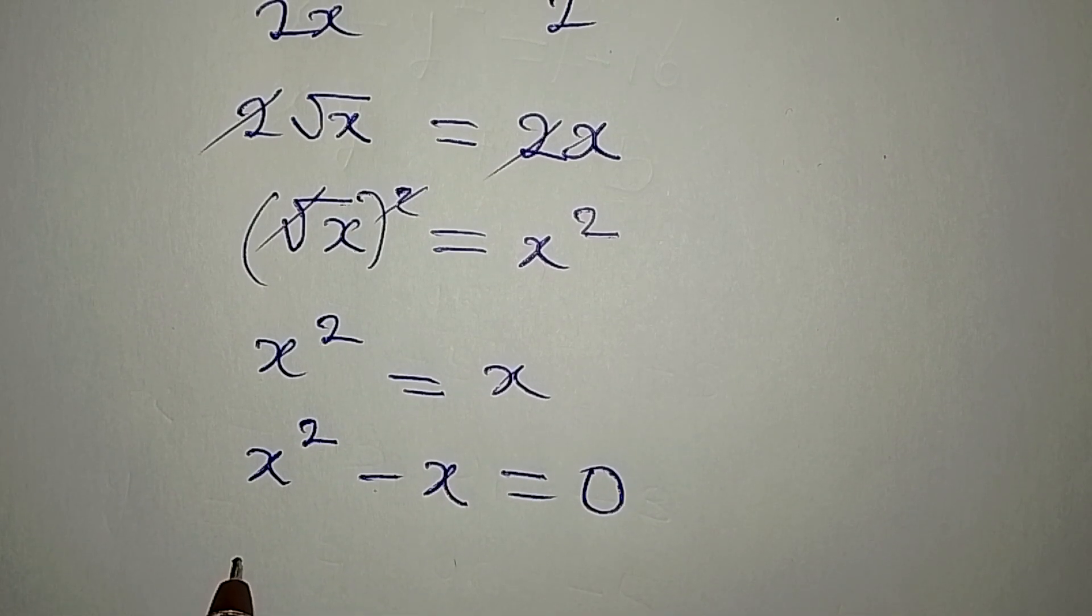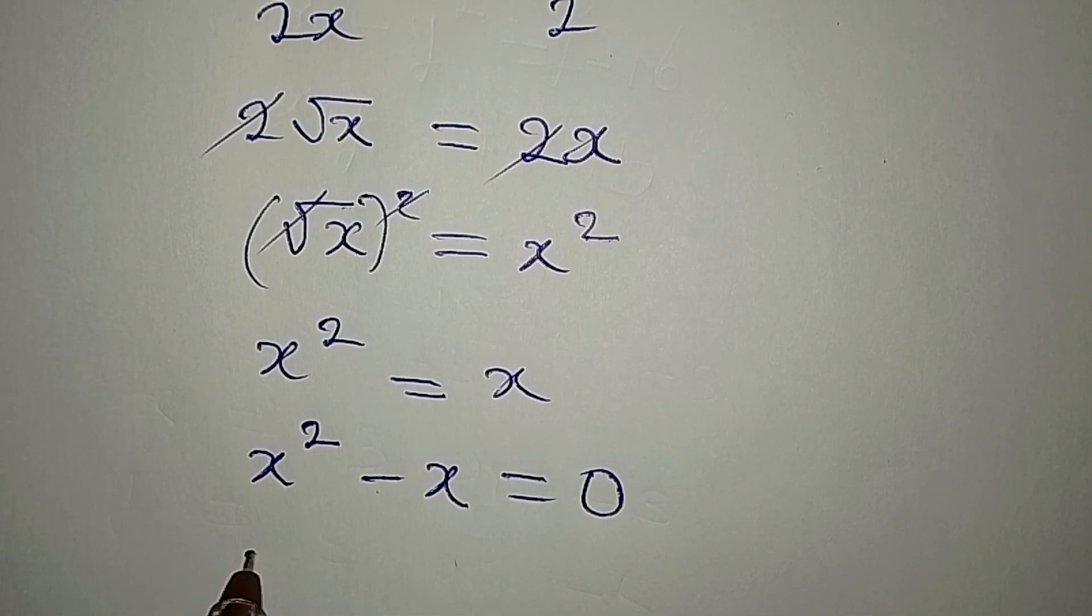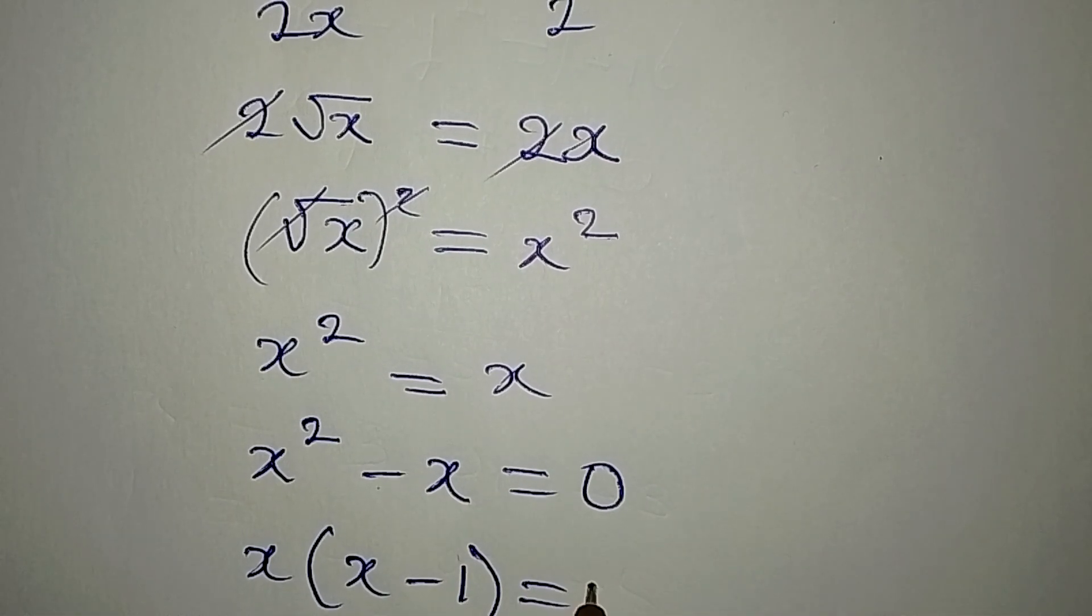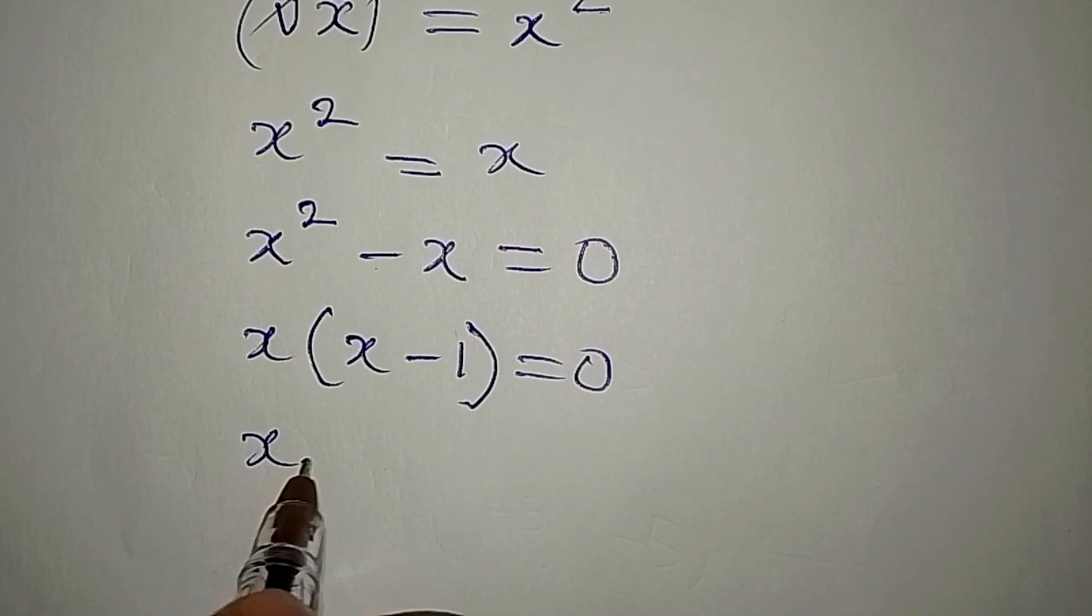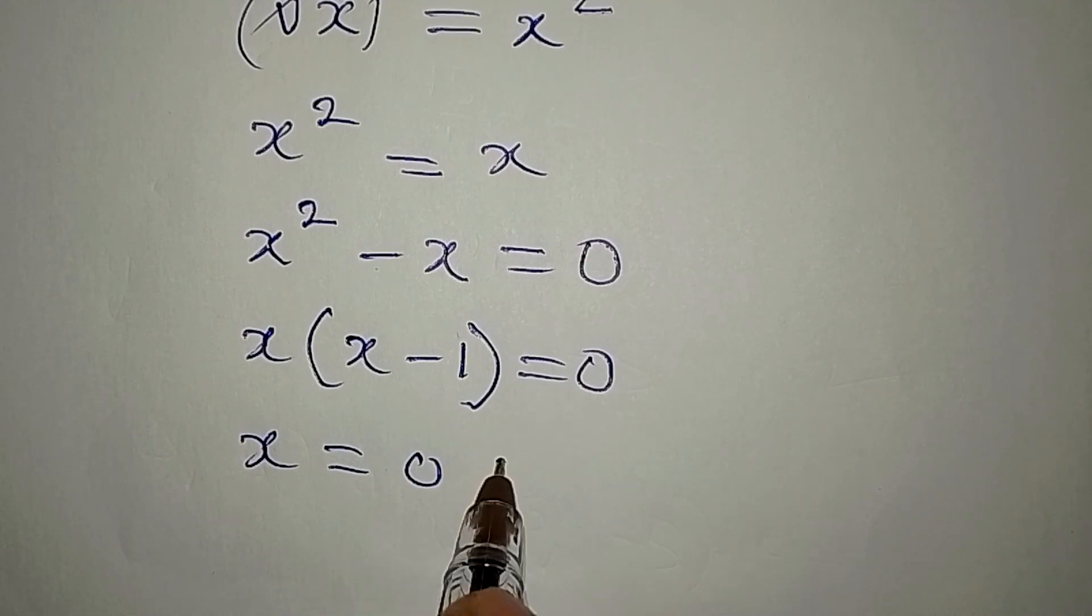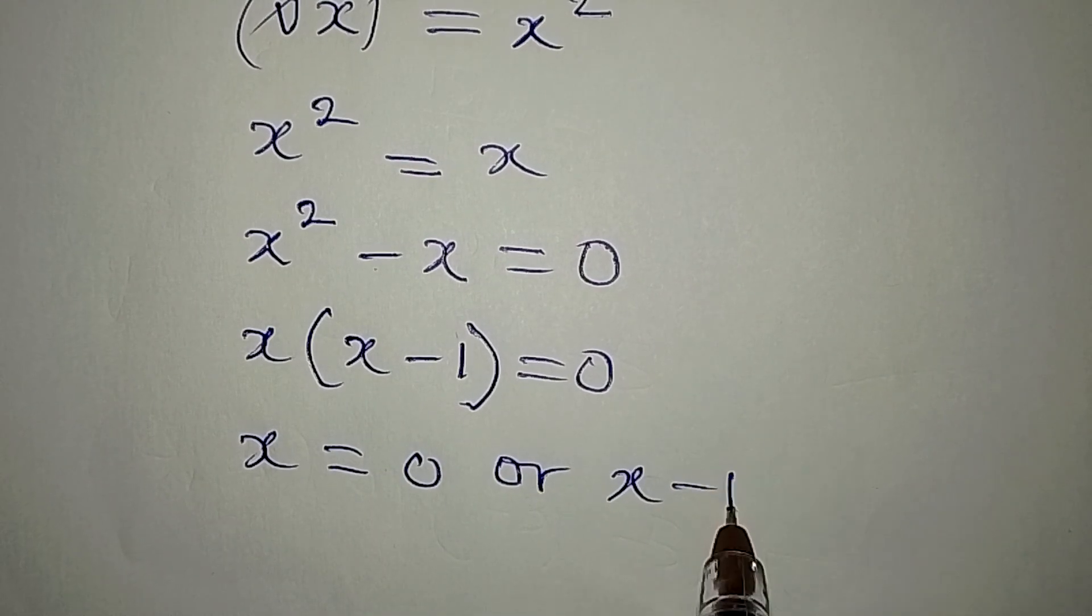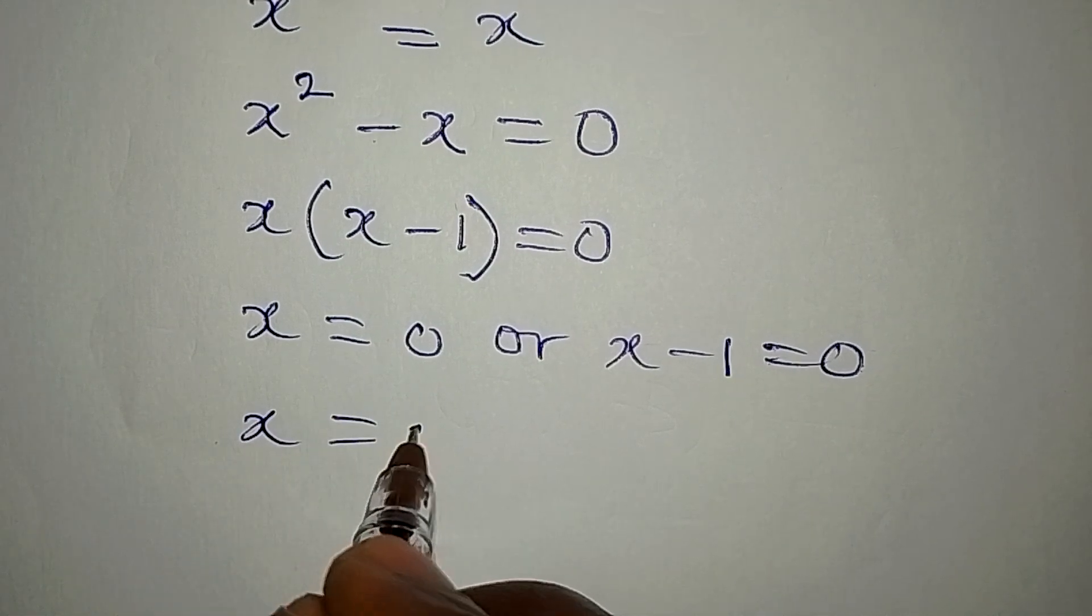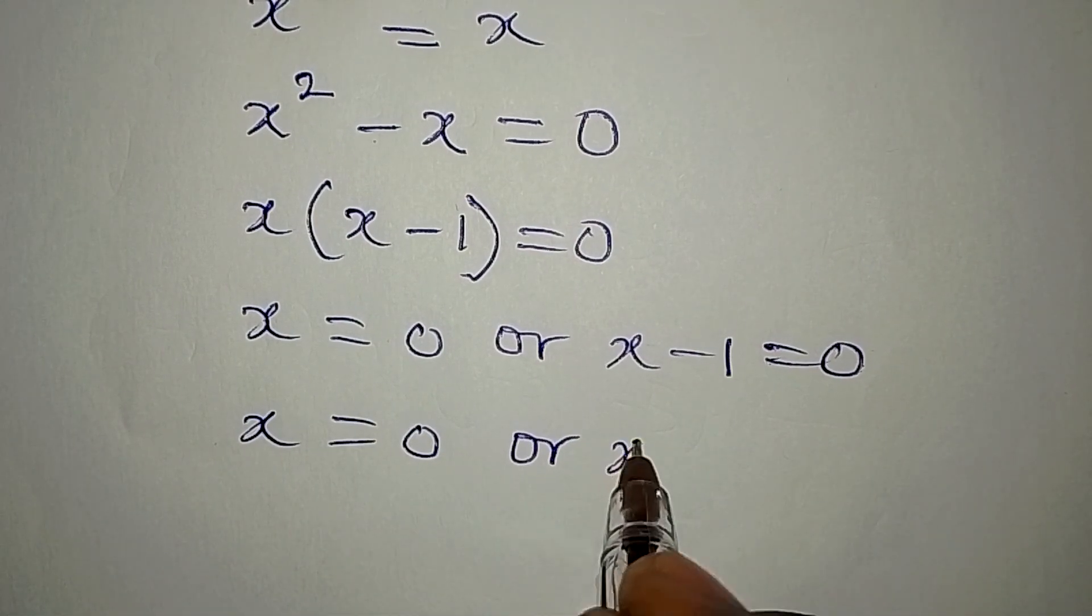So that from here x is equal to 0, or x minus 1 equals 0. X equals 0 or x equals 1. Therefore our x equals 0 or 1.